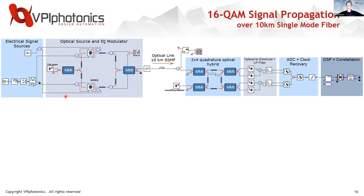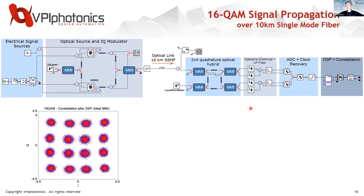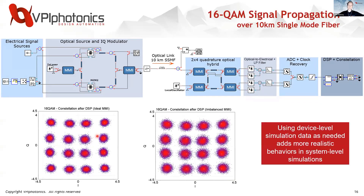On the far left we have our electrical signal sources to define our waveform, our optical source and IQ modulator. You can see these MMIs from the circuit-level design — even inside of the Mach-Zehnder modulators, there are MMIs there as well. The signal passes over fiber, goes through our optical hybrid, gets detected by photodiodes, and we do analog-to-digital conversion, clock recovery, DSP, and analyze the resulting constellation. This is the ideal case for an ideal MMI, but using our simulation results we can see how the constellation changes, showing impairments in the MMI.